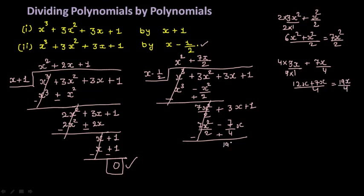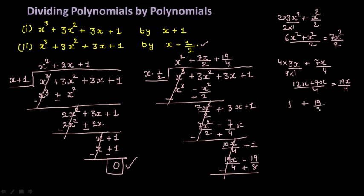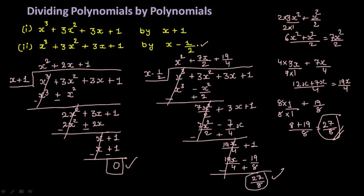So keep 19x by 4 here, plus 1. What do you multiply with x to get 19x by 4? Put 19 by 4 in the quotient. Then 19 by 4 into minus 1 by 2 gives minus 19 by 8. Change the sign again: 19x by 4 cancels and you need to add 1 plus 19 by 8. Find the LCM: multiply by 8, giving 8 plus 19 by 8, which equals 27 by 8. So your remainder is 27 by 8 and your quotient is x square plus 7x by 2 plus 19 by 4.